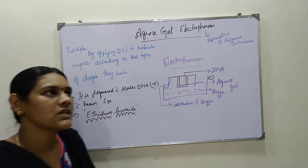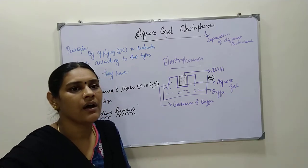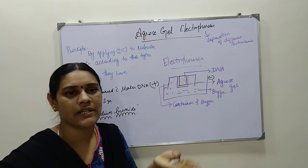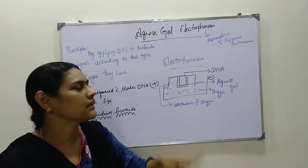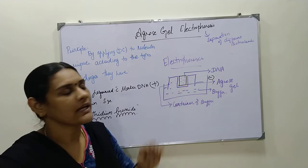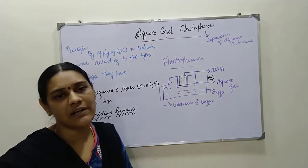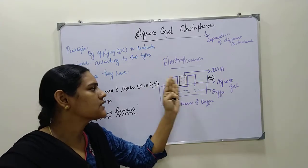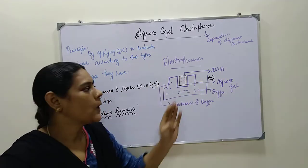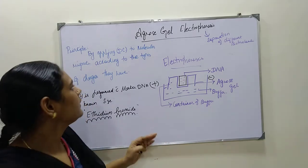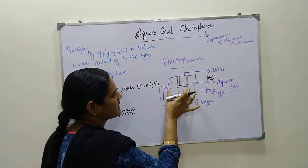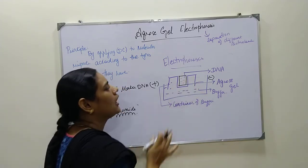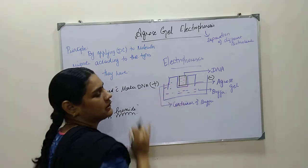Gel is like the semi-solid state you have seen in some kits — like jellies you know. It is in a semi-solid state, and we will see this gel. In that gel only the DNA will run based on their charges, and they will migrate on the gel. By giving a DC current through this electrophoresis apparatus, this is the platform where we are going to place the gel.